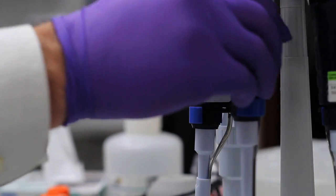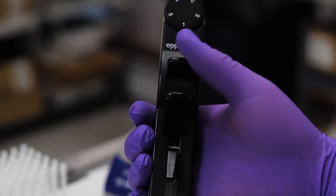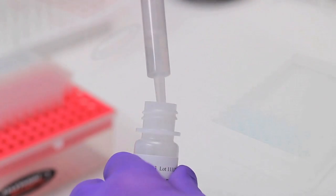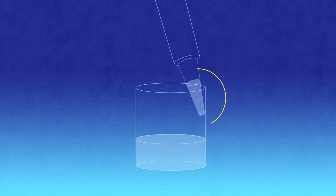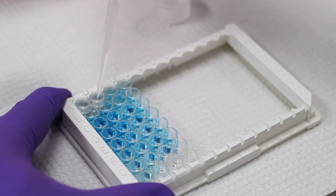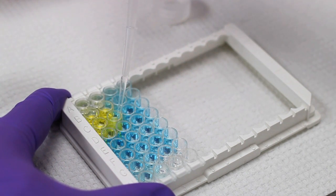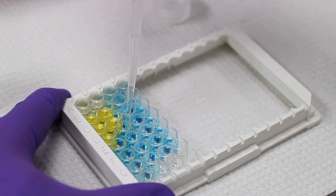Following the incubation period, use a calibrated single channel repeating pipette and add 100 microliters of HRP stop reagent to each well, once again placing the tip at the top of each well. Once the reagent is added to the well, the color will turn from blue to yellow. The intensity of the yellow should be directly proportional to that of the blue.